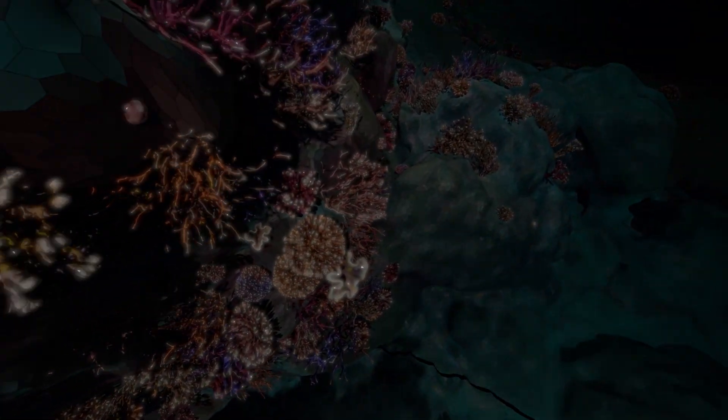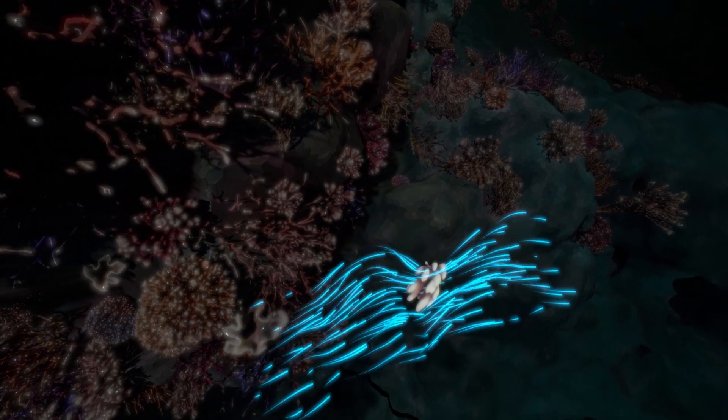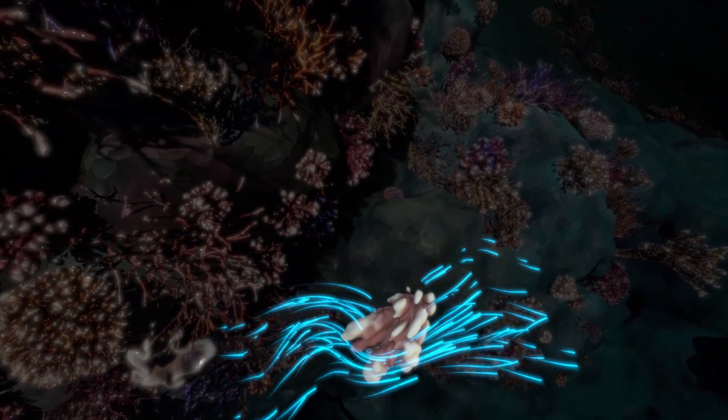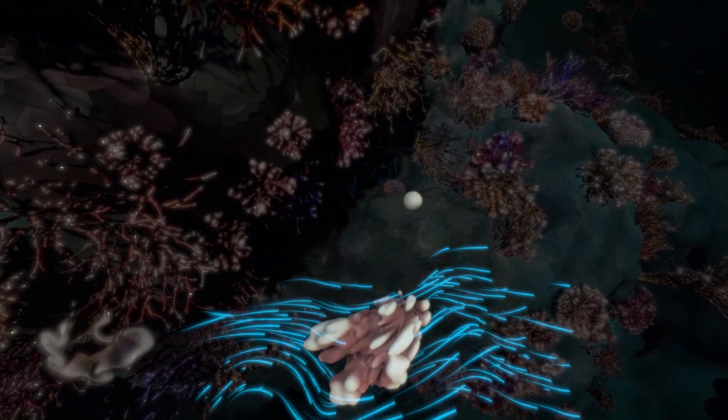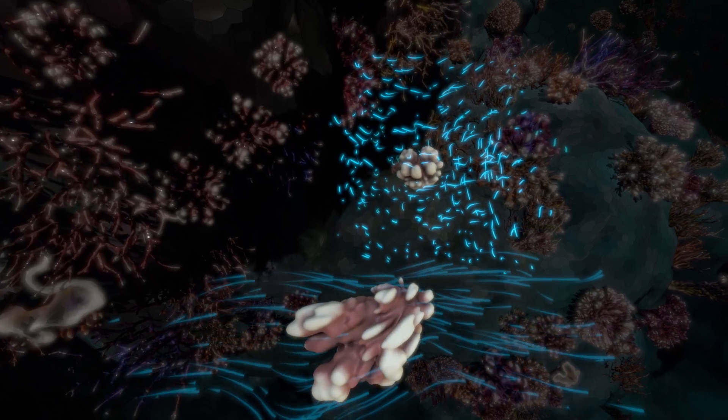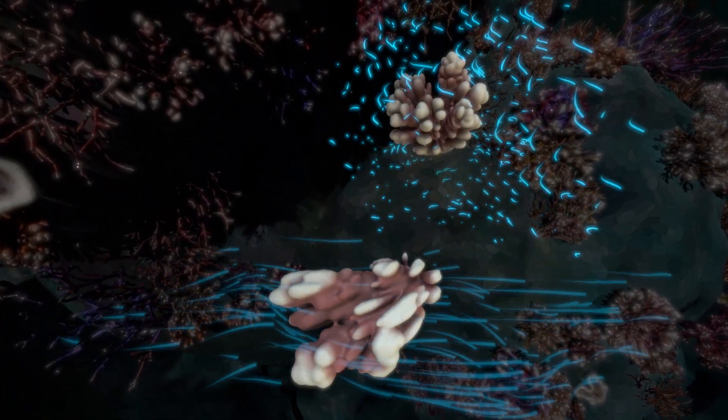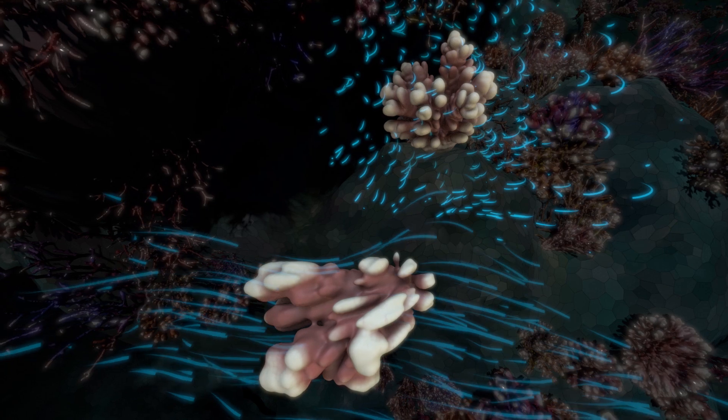Ocean currents and other factors can change the coral's shape. The same species can look quite different depending on something as simple as how fast the surrounding water is moving.